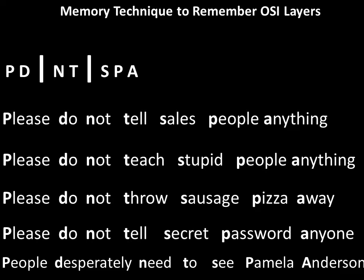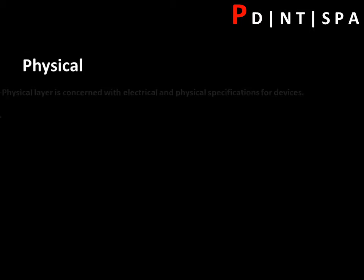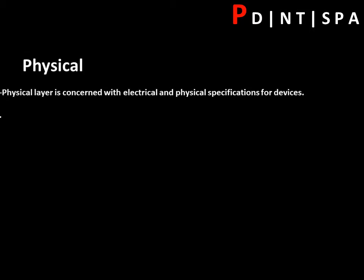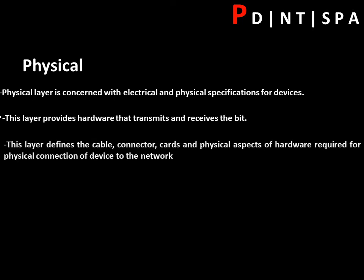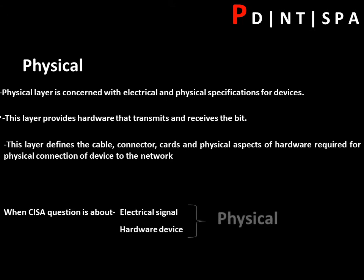P stands for Physical, D for Data Link, N for Network, T for Transport, S for Session, P for Presentation, and A for Application. The Physical layer is concerned with electrical and physical specifications — hardware, cables, connectors, and other physical aspects. So when a CISA question is about electrical signal or hardware device, your answer should be Physical layer.